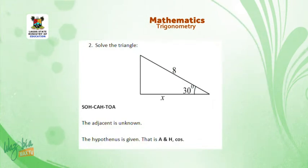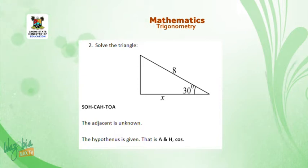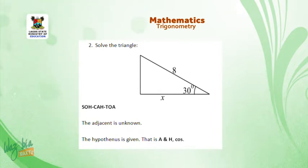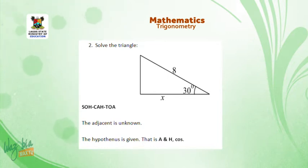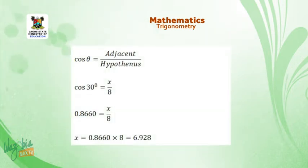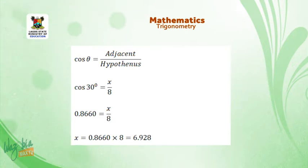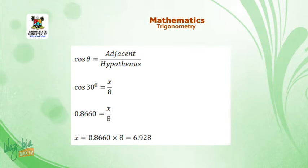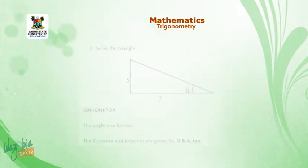Another example: a triangle with angle 30 degrees, hypotenuse 8 centimeters, and adjacent side x. Write out SOHCAHTOA. The unknown is the adjacent side (A) and the given is the hypotenuse (H), so we use CAH — cosine. Cosine 30° = adjacent over hypotenuse = x over 8. Finding the value of cos 30° from a four-figure table or calculator and cross-multiplying gives x = 6.928 centimeters.